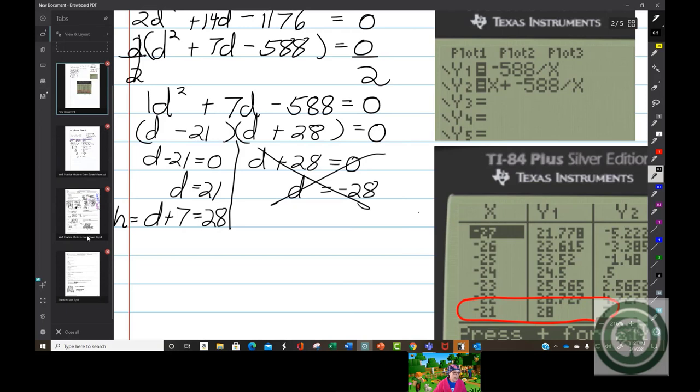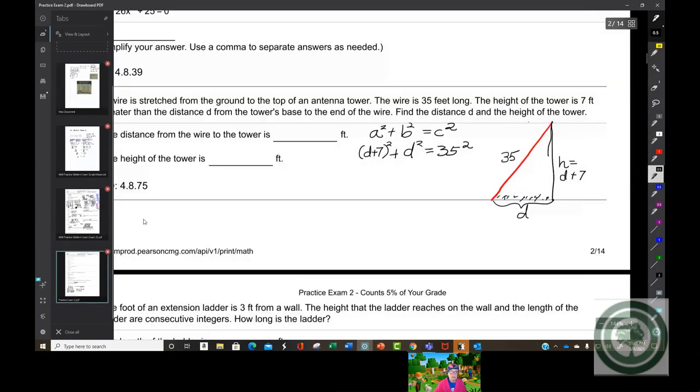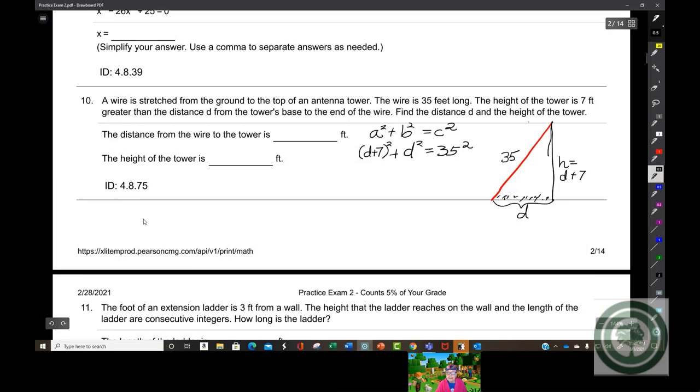So 21 and 28 are our answers. The distance is going to be 21 feet, and then this is seven feet longer than that distance, so this is going to be 28, which makes sense. Towers should be 28, not 21.